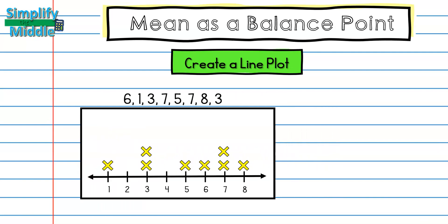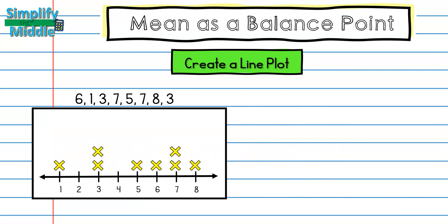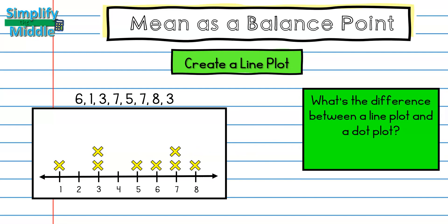Sometimes you might use a dot plot instead of a line plot, so what's the difference? The difference between a line plot and a dot plot is that a line plot will be using X's to represent each data point, where a dot plot uses circles.